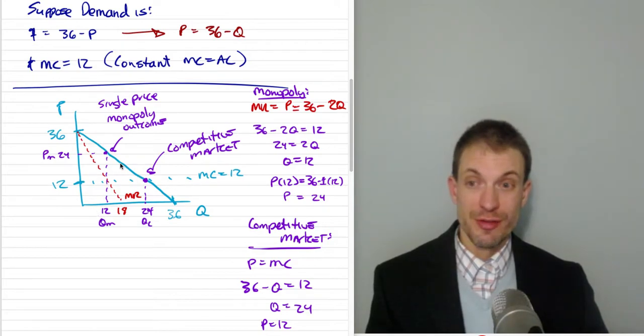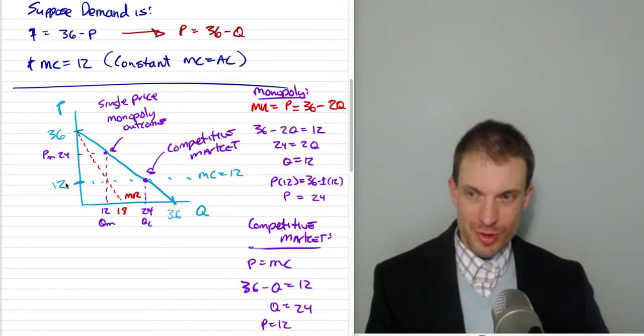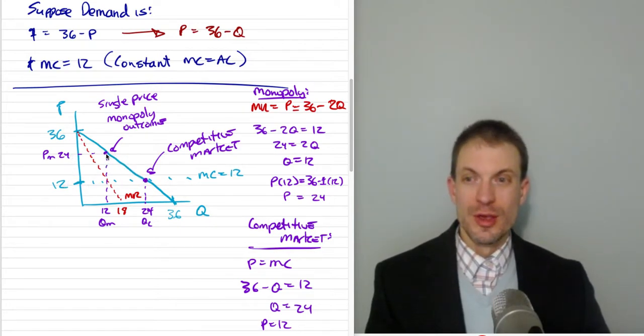There's substantial inefficiency. This triangle right here we'll call that deadweight loss. What's going on is that there's a lot of units, 12 through 24, where these consumers on the demand curve have willingness to pay between 12 and up to 24. Their willingness to pay is higher than the cost to produce those units.